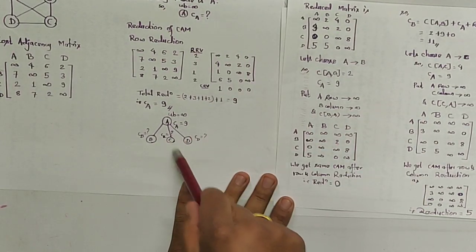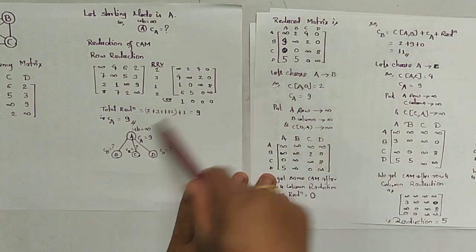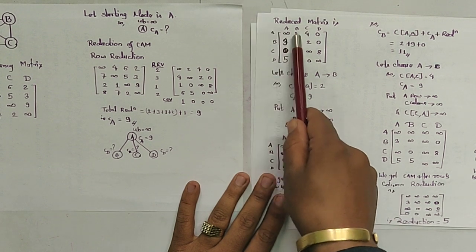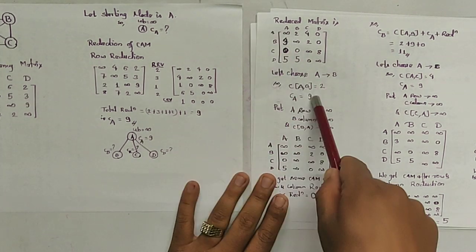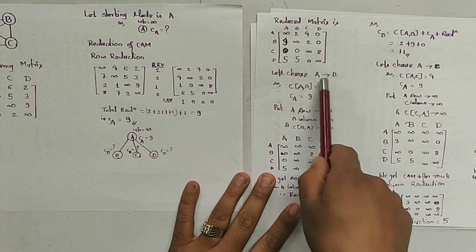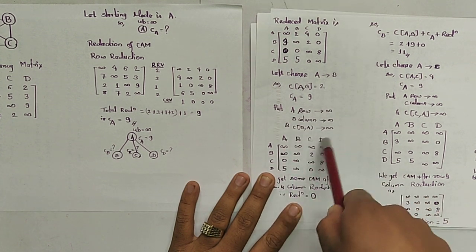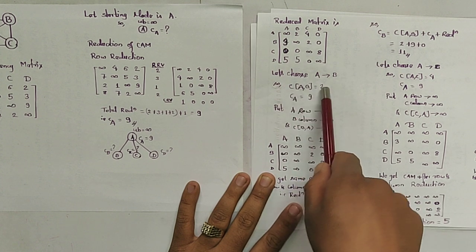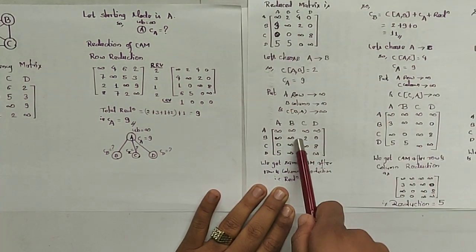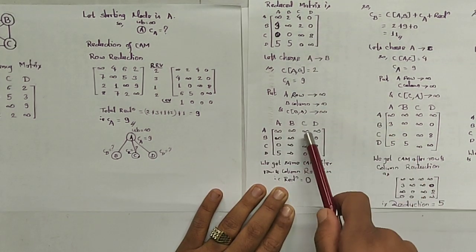The paths from A are: A to B, A to C, and A to D. We need to choose the minimum cost path. For path A to B: the cost from A to B in the matrix is 2, and the cost of node A is 9. We then set the entire A row to infinity, the entire B column to infinity, and set B to A as infinity since we came from A to B.